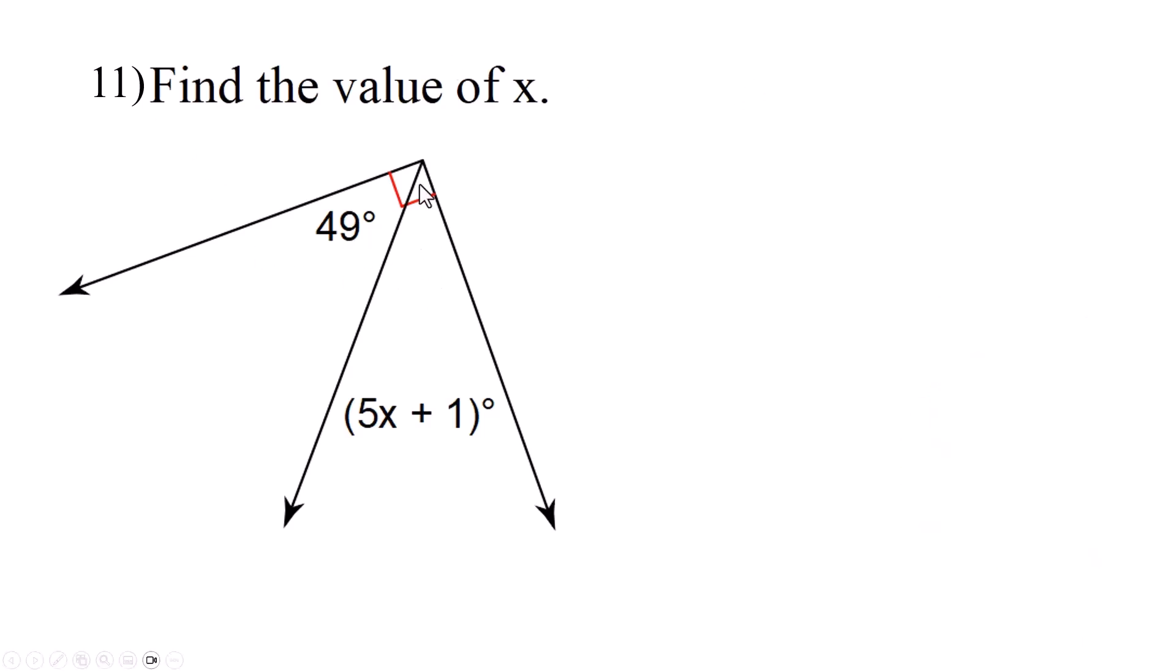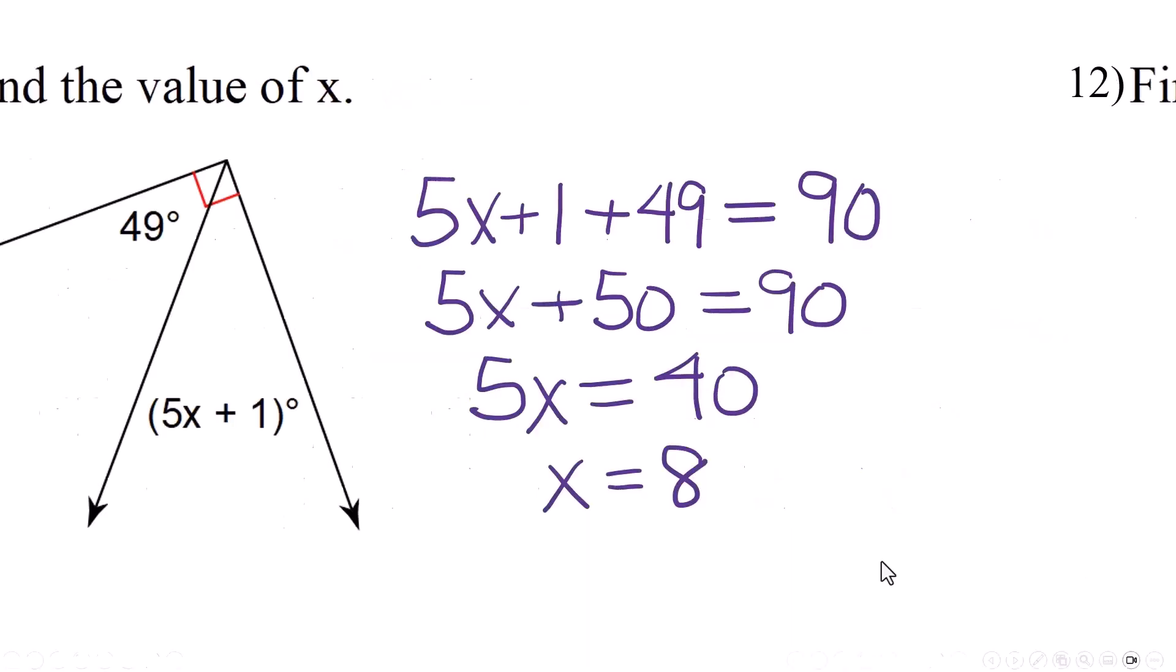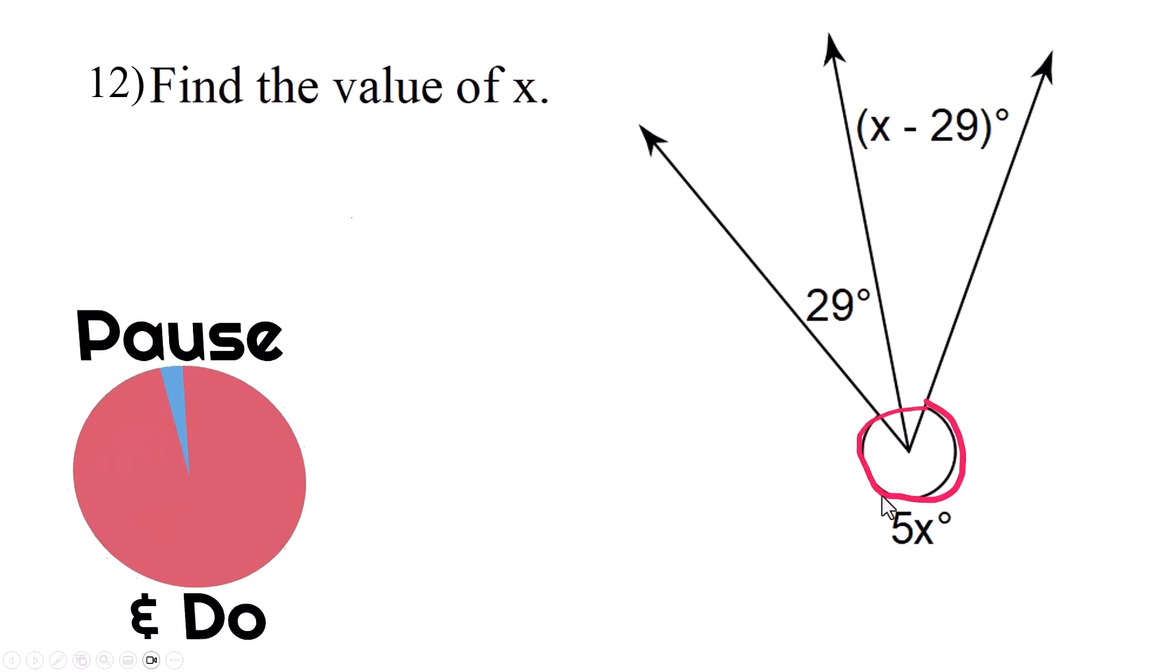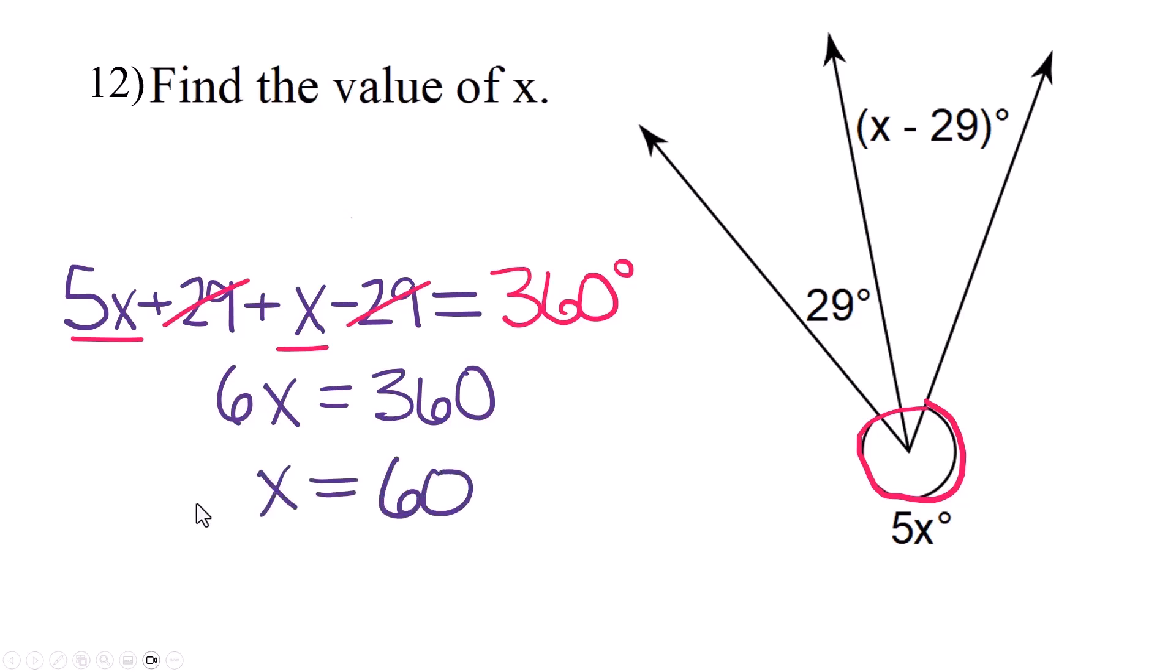These two angles are adjacent, they share a side. The 90 degree mark is right here, which means they're complementary, which means they add up to 90 degrees. I'm going to add them together and set it equal to 90 degrees. Combine these numbers, we get 5x plus 50 equals 90. Subtract 50 from both sides, then divide by 5, we get x equals 8. Try this one. This is all going to add up to be one big circle, that's 360. They've got positive 29 here and minus 29 there on the same side, so they cancel out. You have 5x and an x, that is 6x, and that equals 360. Divide both sides by 6, x equals 60.